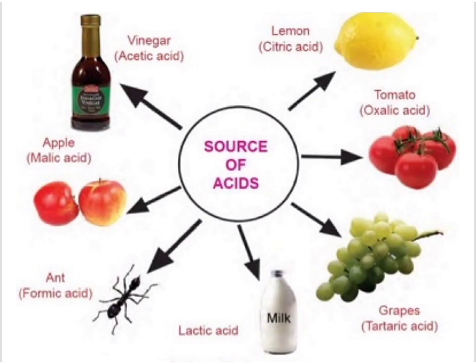Next let us look at the different sources of acid. Vinegar contains acetic acid. Lemon contains citric acid. Tomatoes contain oxalic acid. Grapes and tamarind contain tartaric acid. Curds and milk contain lactic acid. Apples contain malic acid. And ants — if you have ever been bitten by an ant you feel a burning sensation because ants contain formic acid. When they bite you they insert formic acid into your skin, which causes the burning sensation. All these sources are weak acids because they are all natural acids.